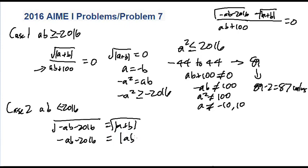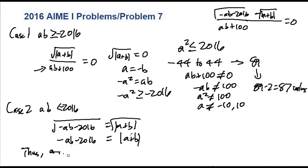So if ab is a positive number — if ab is positive — then negative ab minus 2016 is negative. And that can't be right, because the right side has an absolute value sign and becomes positive. A negative can't equal a positive, so a and b must have opposite signs. And if a and b are opposite signs, negative ab becomes positive, so the left side can become positive, and the right side is automatically positive, which creates a chance for the equation to be valid.